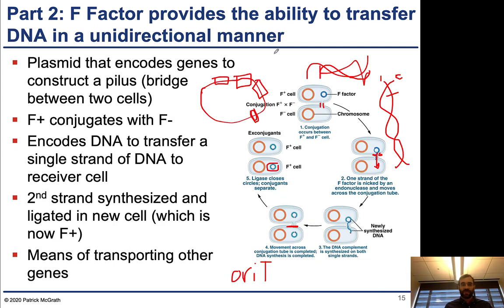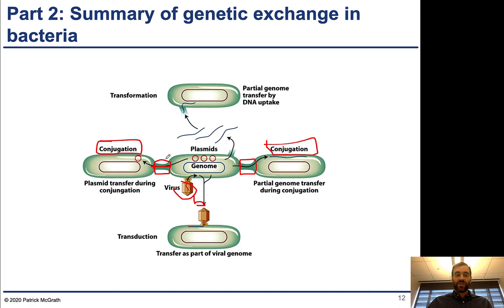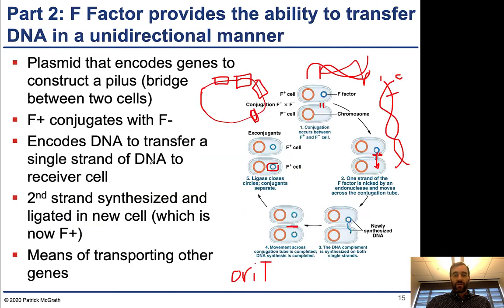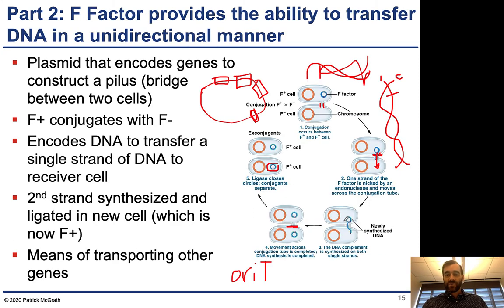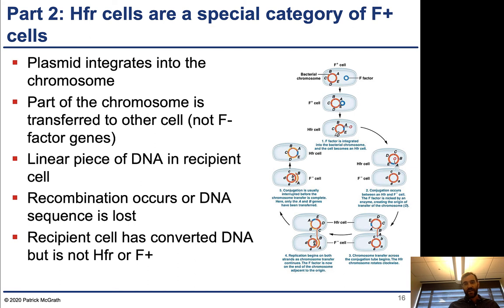That is the process of conjugation where one plasmid gets transferred to the other cell. However, only the plasmid is transferred — whatever DNA is on the chromosomes remains within the cell. There is no way to transfer chromosomal DNA into the other cell unless something occurs where the plasmid actually integrates itself into the chromosome.